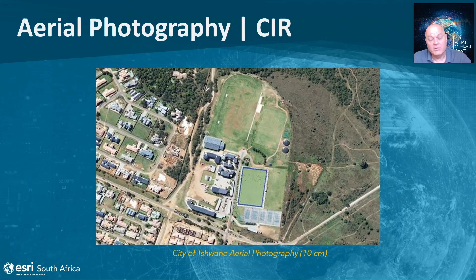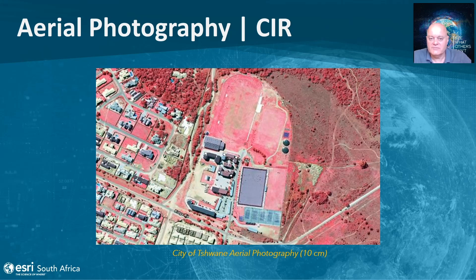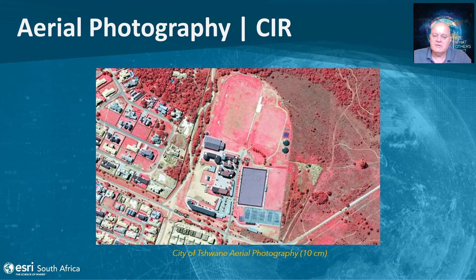Next, I'll talk about aerial photography and developments in this area. Here is a high-resolution 10-centimeter aerial photo of the City of Tshwane, showing a school in the east of Pretoria with sports fields, tennis courts, and even an airplane visible in the northwest of the image. The city also captured an infrared band, giving us unique capabilities — the hockey field appears as astroturf rather than grass. This enables traditional remote sensing techniques such as NDVI indices and classification, which wouldn't be possible with an RGB image alone.